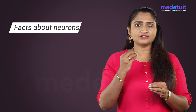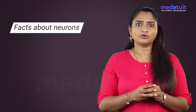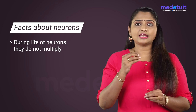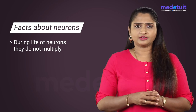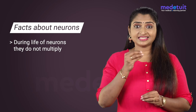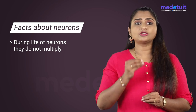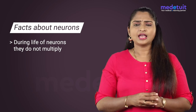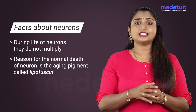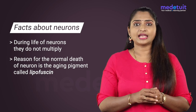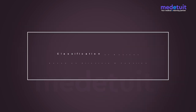You have to understand certain facts about neurons. During the life of the neurons, they do not multiply. But there is a steady depletion of the neurons. And the reason for the normal death of the neuron is the aging pigment called lipofuscin.